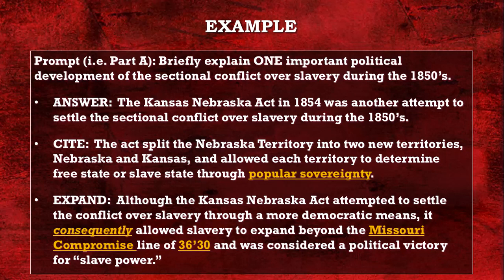Now for the expansion: 'Although the Kansas-Nebraska Act attempted to settle the conflict over slavery through more democratic means, it consequently allowed slavery to expand beyond the Missouri Compromise line of 36°30'.' The author takes it even further, adding that it 'was considered a political victory for slave power.' This uses key terms like 'consequently' and connects the claim to broader historical context — a great example of how to ace the SAQ for Part A.